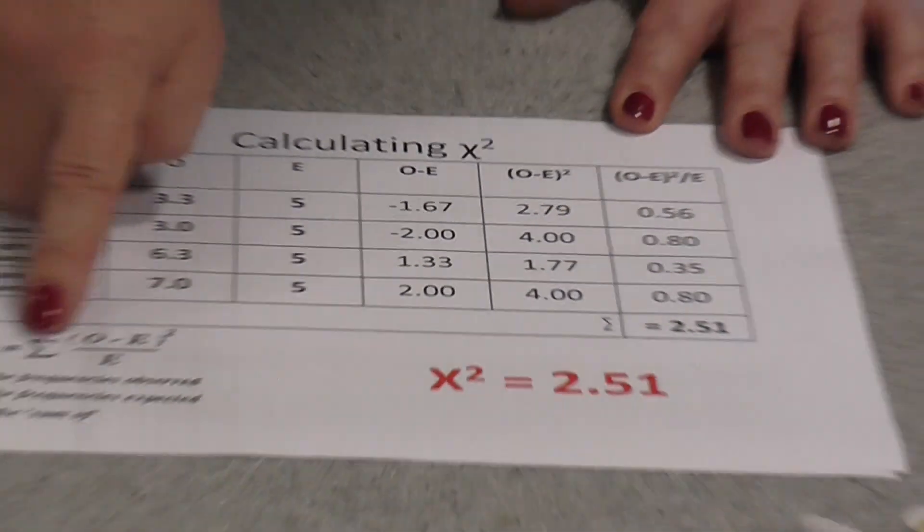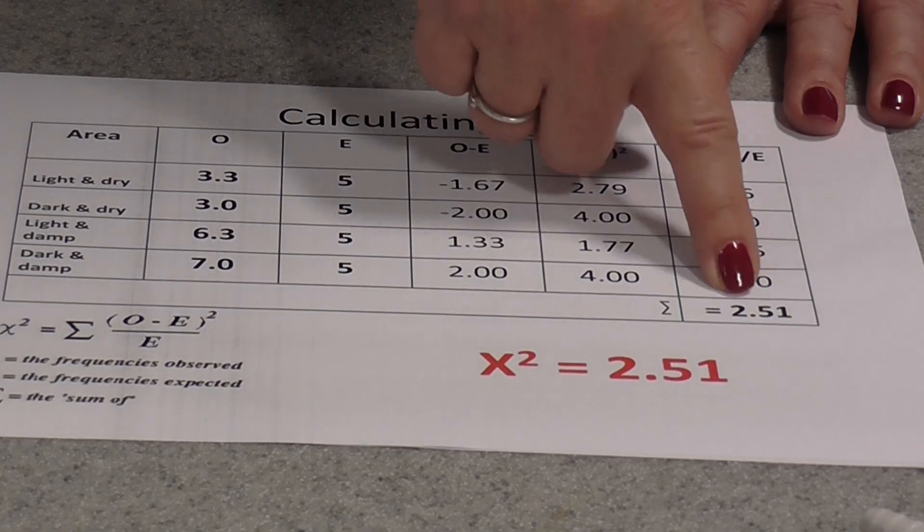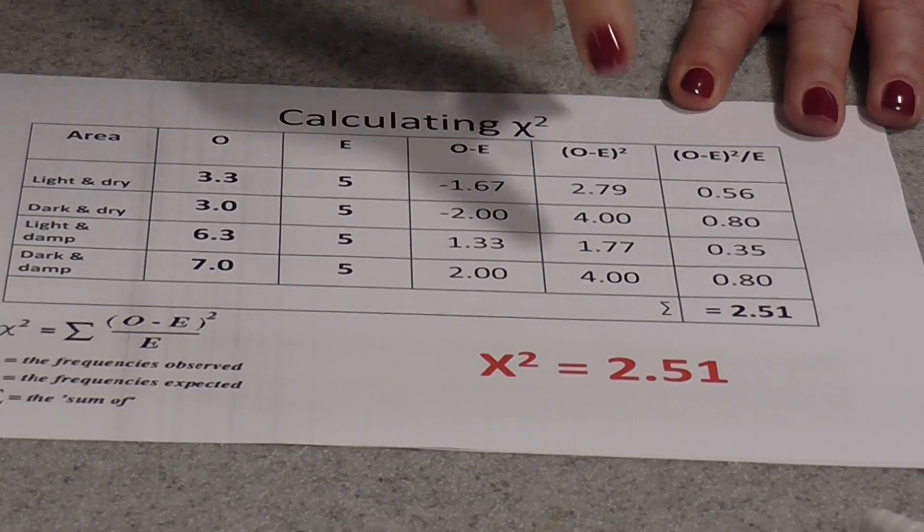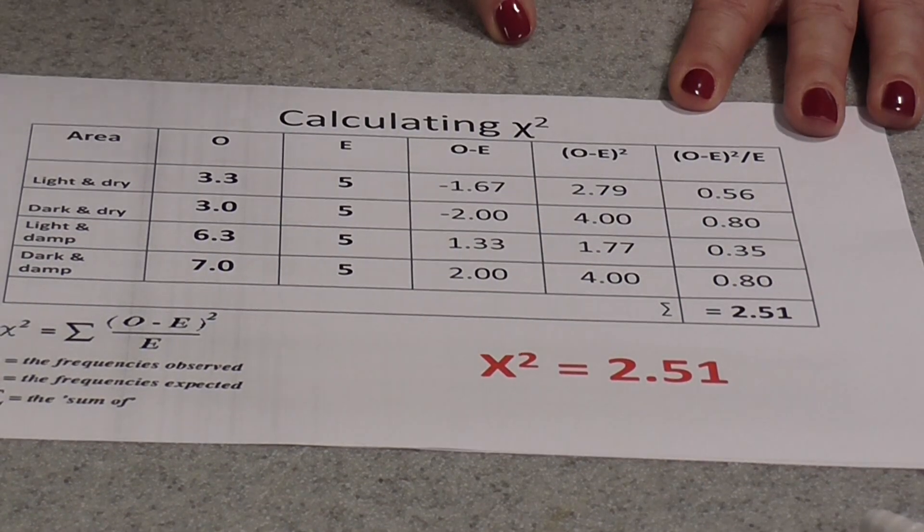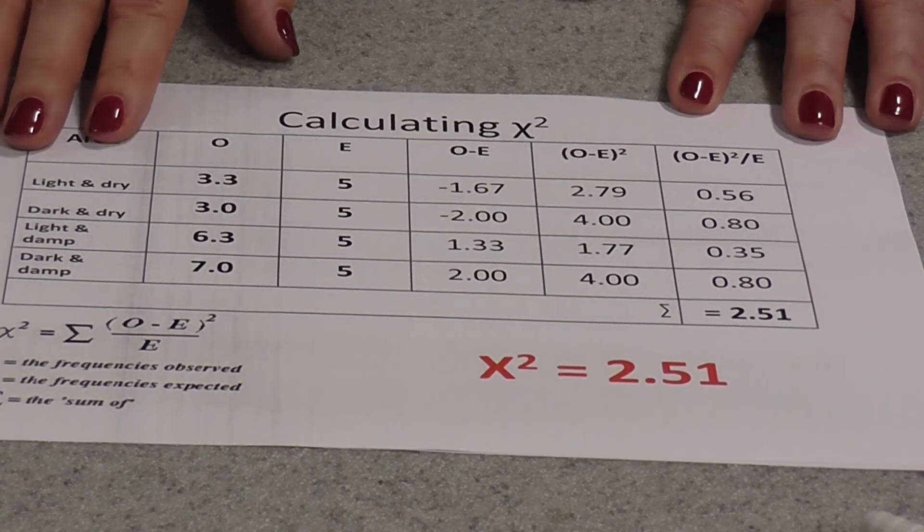Now to calculate our chi-squared, all we have to do is sum those results. In other words, add all four of the values we have there together. And if we do that, we get 2.51. So the result of the chi-squared test in this case is 2.51.